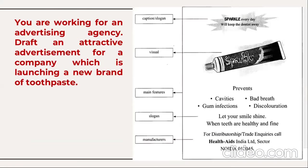Next: you are working for an advertising agency — draft an attractive advertisement for a company launching a new brand of toothpaste. You need to mention a slogan or caption, for example: 'Sparkle every day will keep the dentist away.' Include a visual or image, then the main features — prevents cavities, bad breath, and gum infections. Then a slogan: 'Let your smile shine when teeth are healthy and fine.' Mention the manufacturer's name. For print media this is expensive, but for an exam you can draw and add colors.